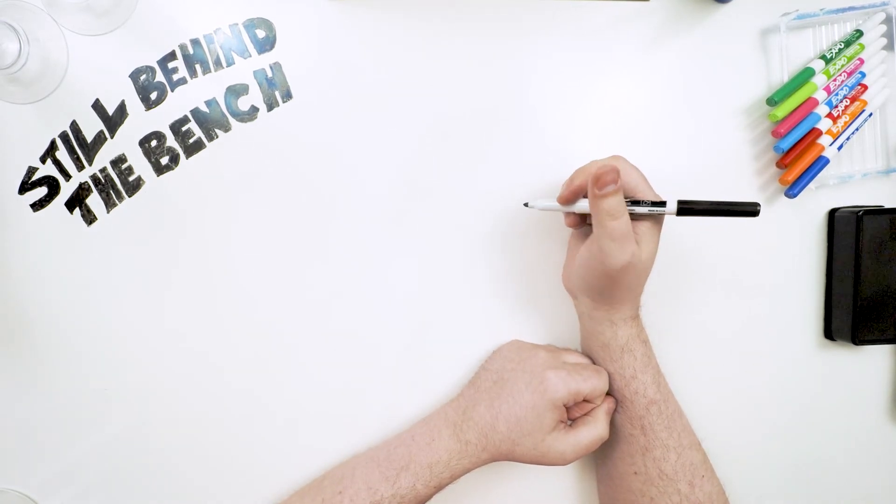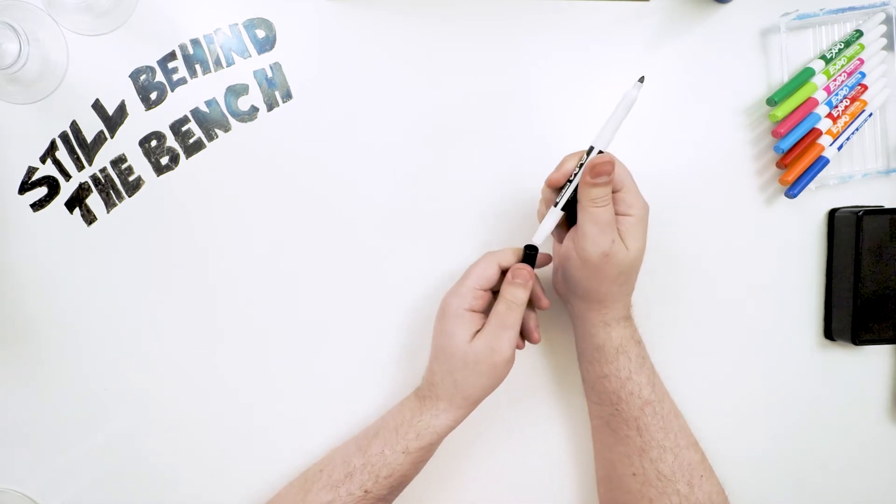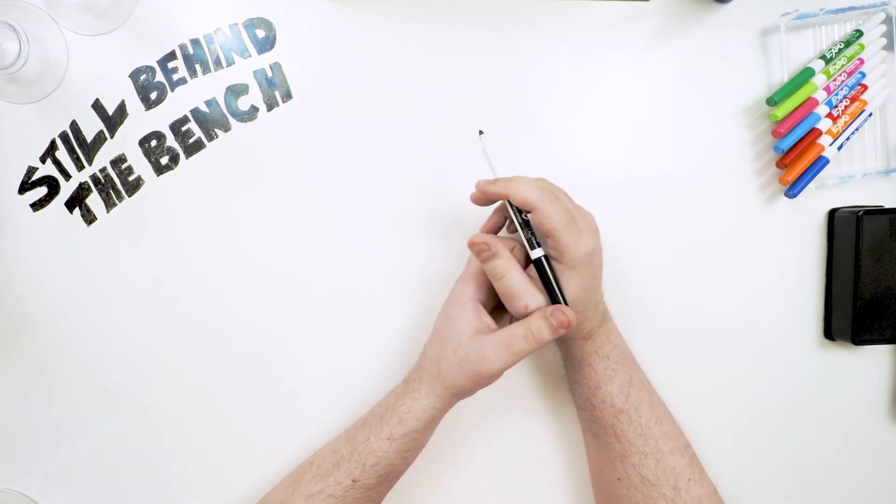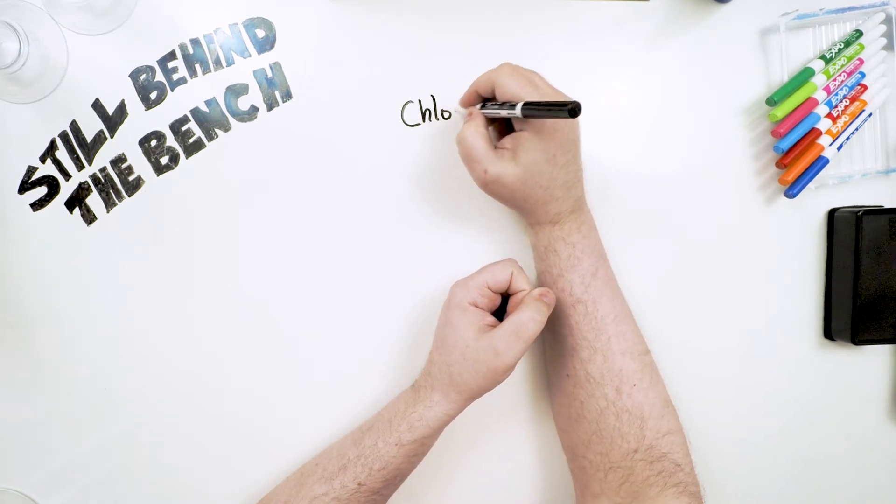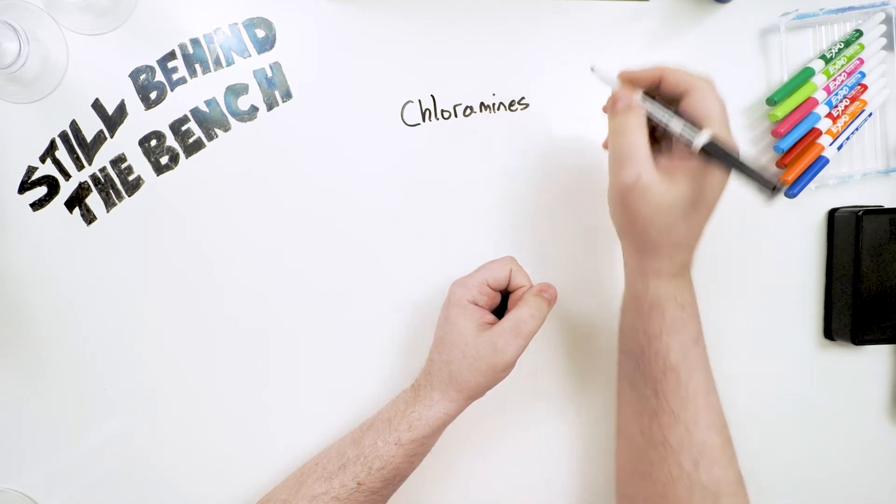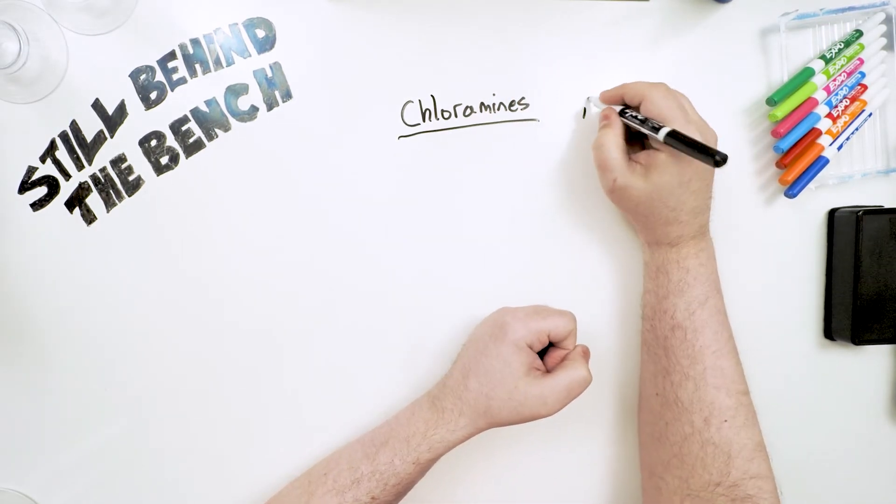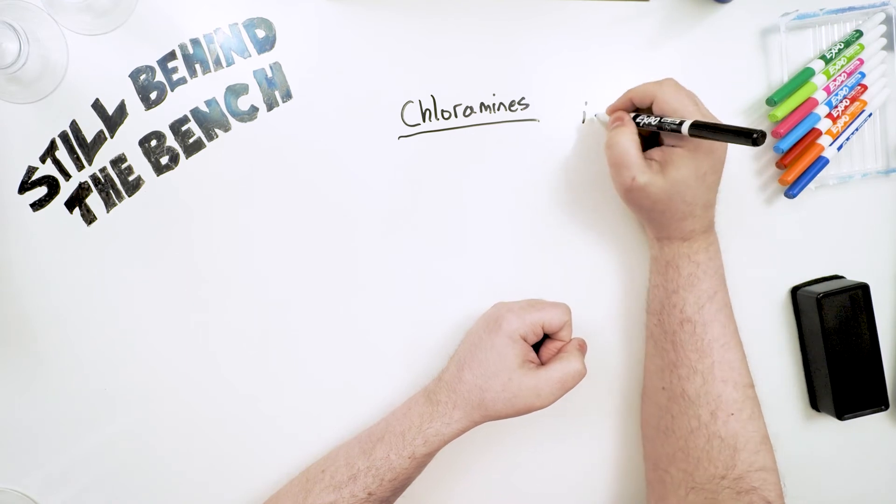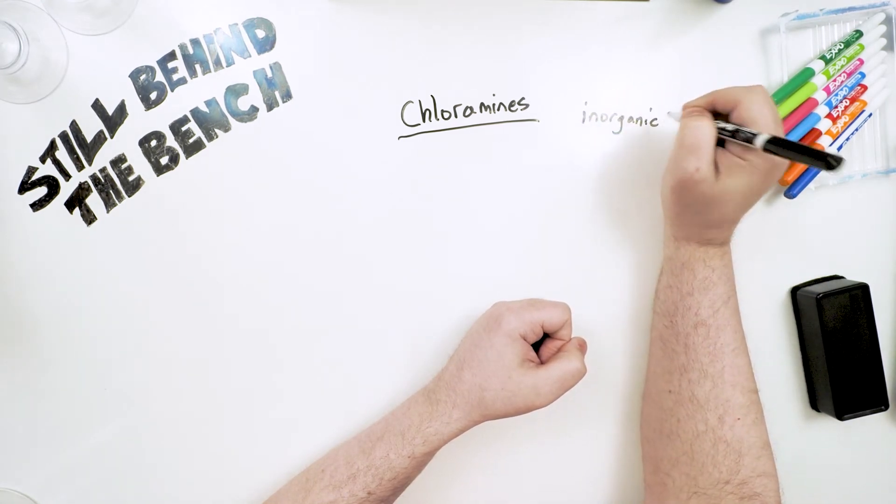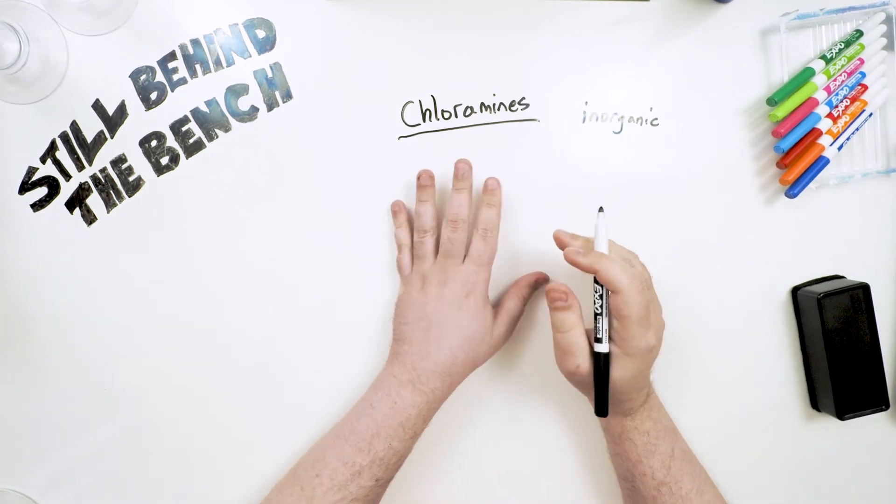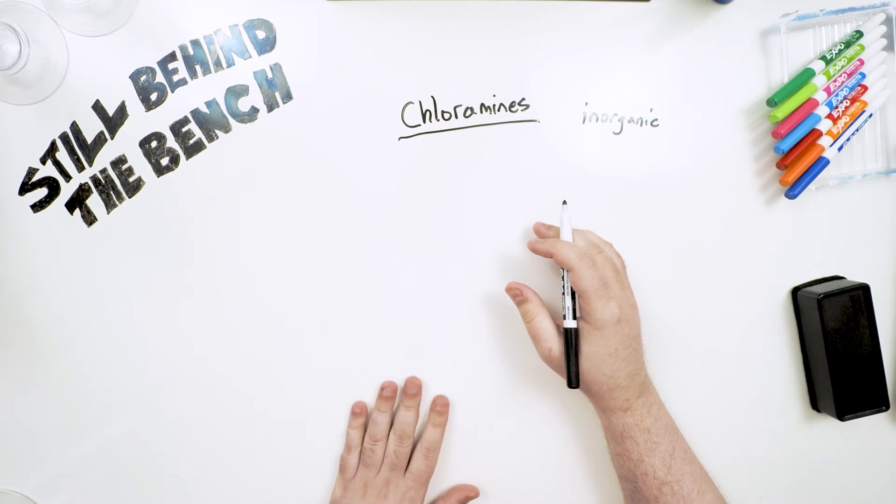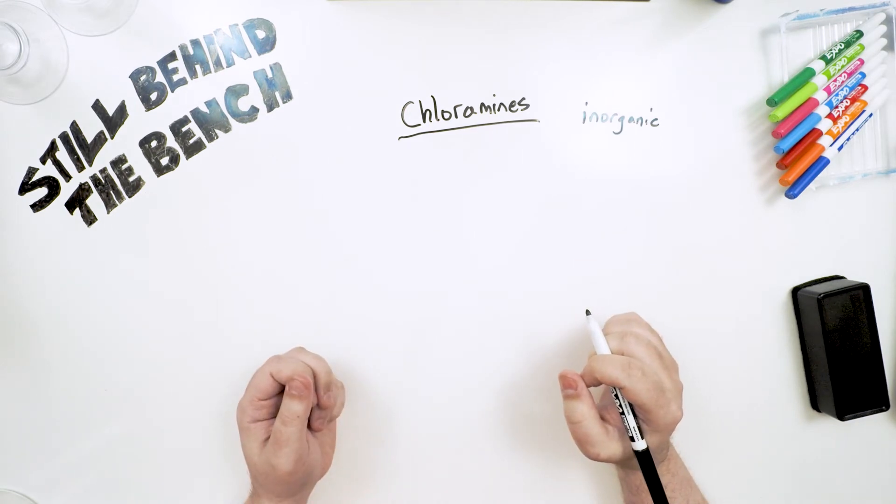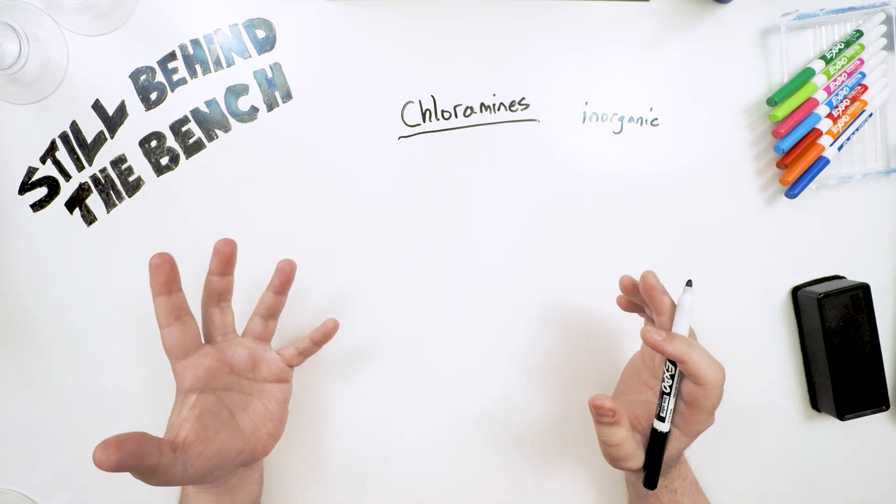A good example would be bleach and ammonia. A mixture that people still seem to create. They think it makes a better cleaner or they may do it by accident. It creates a class of compounds called chloramines. Specifically it creates inorganic chloramines because there's also organic chloramines. The reason I'm bringing up chloramines specifically is because you can accidentally make it in the process of making a mash or a wash. How does this happen?